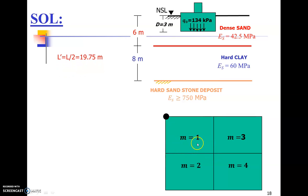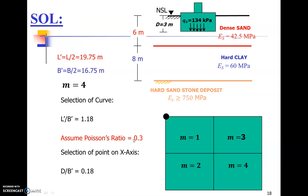Here to recognize the half of the length is given by 19.75 meters, half of the width is 16.75 meters, total number of portions is four. To decide about the curve we need to determine L over B, which is around 1.2, and assuming a Poisson's ratio of 0.3 for most sands. Then selection of the point on x-axis, which is D over B', is 0.2 nearly.